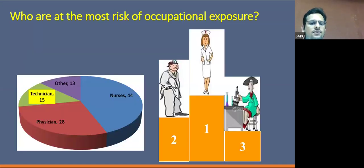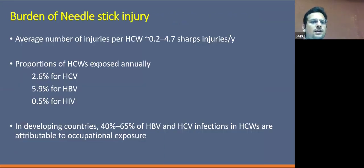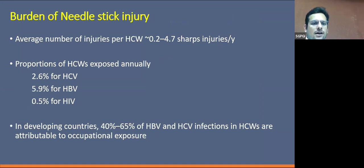Among healthcare workers, nurses are at much higher risk compared to physicians and technicians. Out of the total healthcare worker population, 44% are nurses who acquired needle stick injuries and occupational exposure to hepatitis B virus. The total burden is around 0.2 to 4.7 sharp injuries per year, and the proportion of healthcare workers exposed annually is 2.6% for HCV, 5.9% for HBV, and 0.5% for HIV.